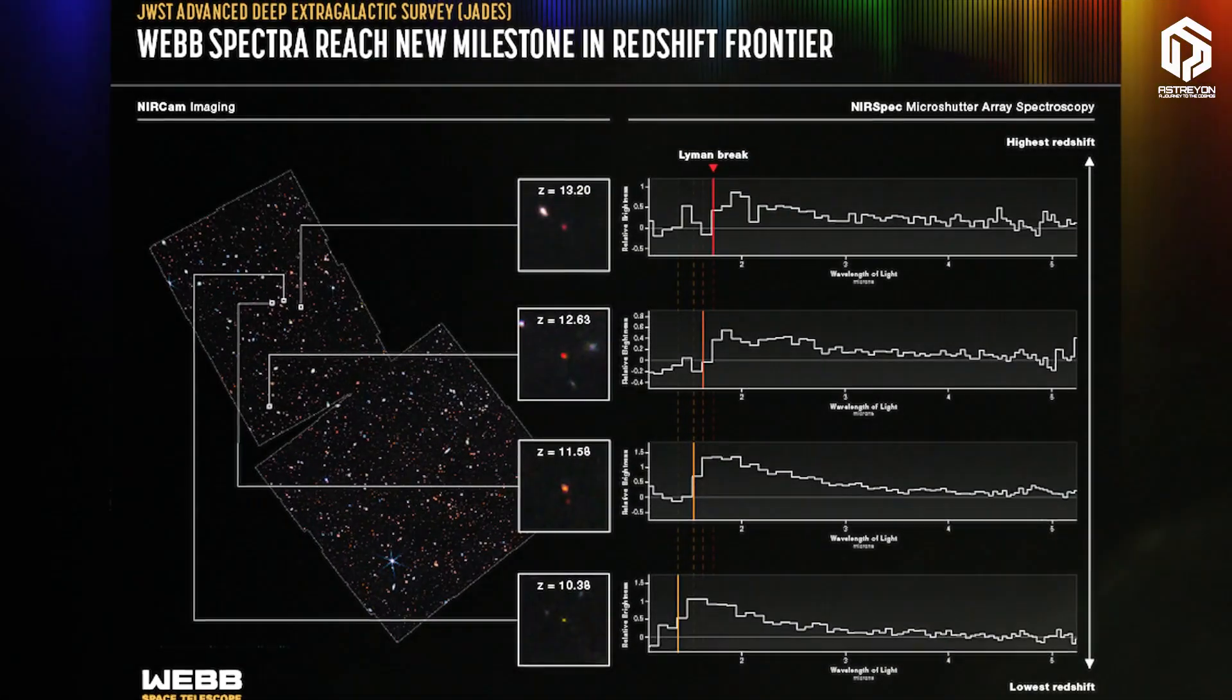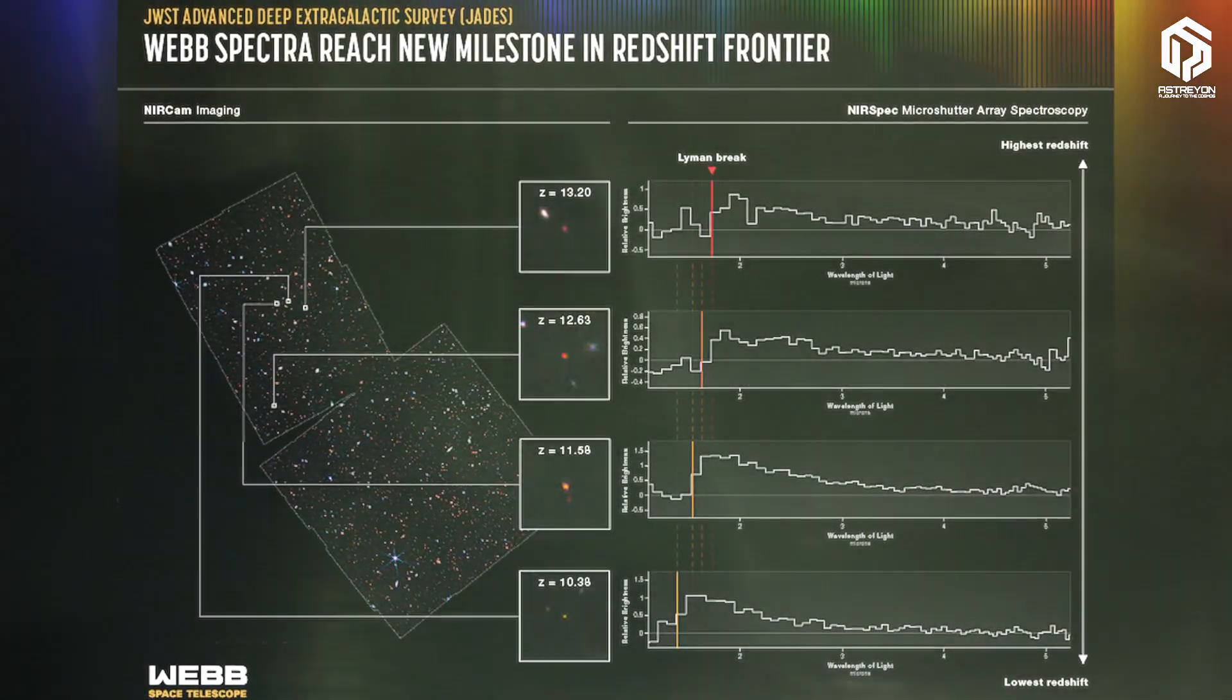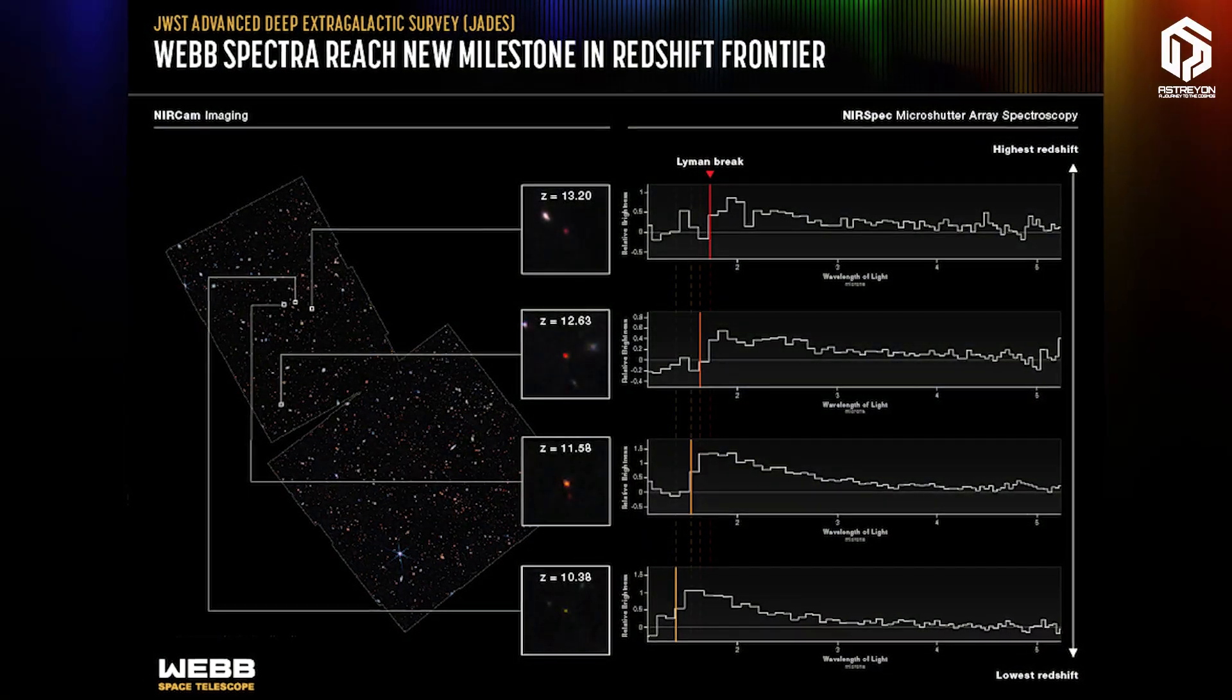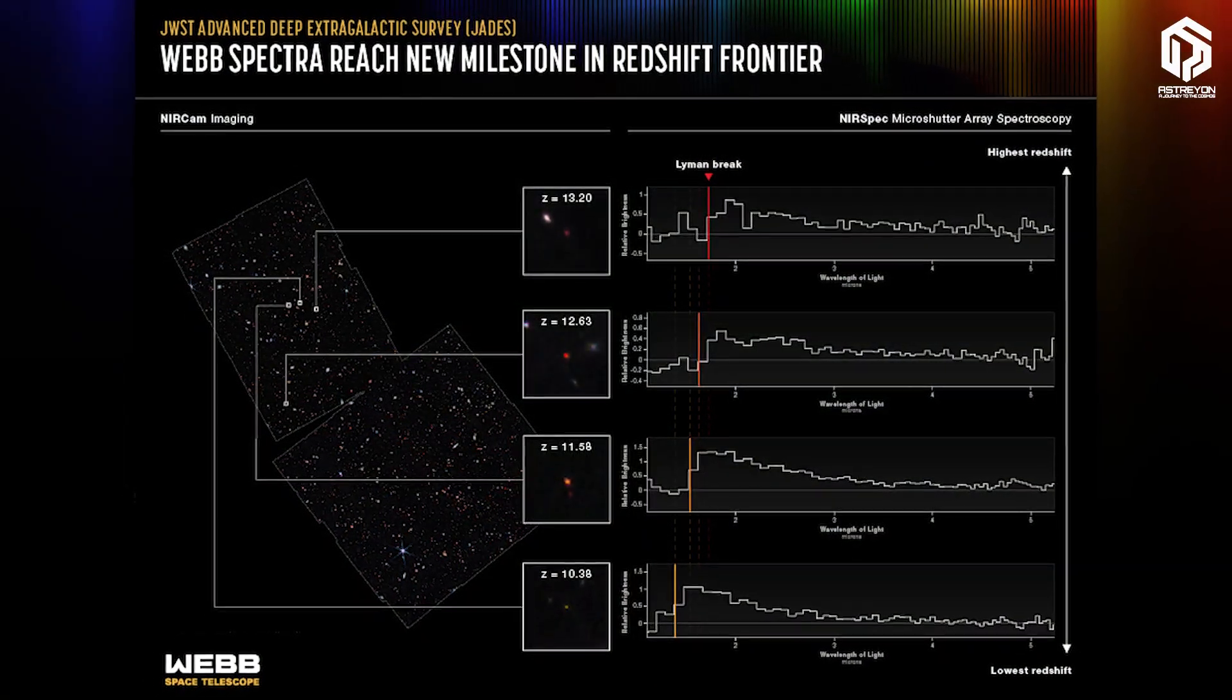Data from programs like JADES, JWST Advanced Deep Extragalactic Survey, where the telescope stares at a small patch of sky for hours to collect faint lights.